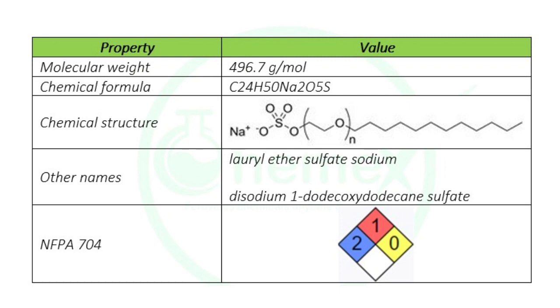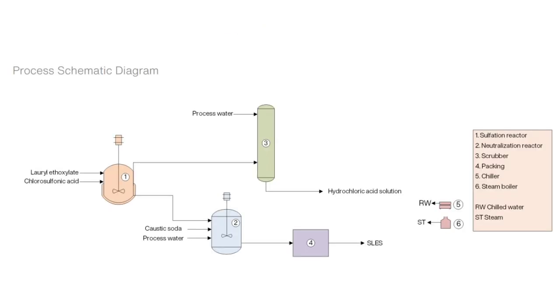In number three, scrubbing, the HCl gas evolved during sulfation is fed to a scrubber where it is absorbed in processed water, generating a 30 percent weight-by-weight hydrochloric acid solution as a byproduct.